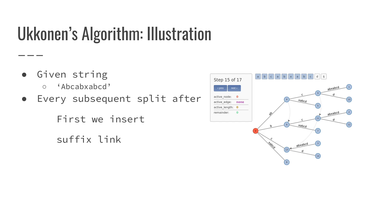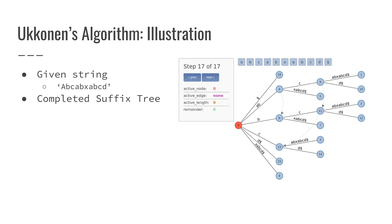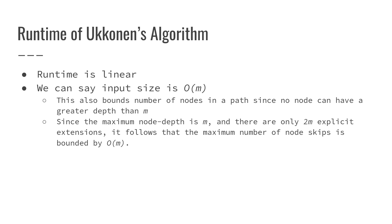Here is the completed suffix tree for the string ABCABXABCD, and this was all done in linear O(M) time, where M is the length of that string. The runtime of Ukonen's algorithm is linear. This O(M) bounds the number of nodes in our suffix tree and bounds the number of nodes in a path since no node can have a greater depth than M. Since the maximum node depth is M and there are only 2M explicit extensions possible, it follows that the maximum number of node skips is bounded by O(M). So the overall construction is O(M).